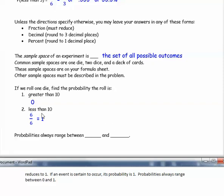That means that our probabilities will always range between zero and one.